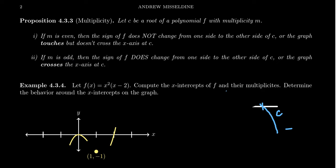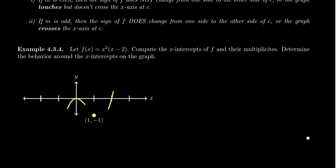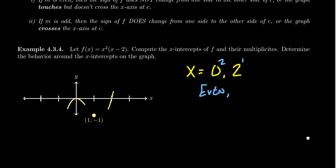Let's look at a specific example: f(x) = x²(x − 2). The roots are x = 0 and x = 2. Since x² means x shows up twice, the multiplicity of 0 is 2 (even), and (x − 2) shows up once, so the multiplicity of 2 is 1 (odd). This means the function will only touch the x-axis at x = 0 and will cross the x-axis at x = 2.